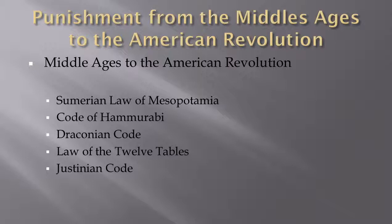Draconian continued to evolve and laid forth the early aspects of the Athenian Constitution, providing if-then expectations of the people, as well as the Law of the Twelve Tables that evolved into the early Roman Empire and established the first codified expectations of society.